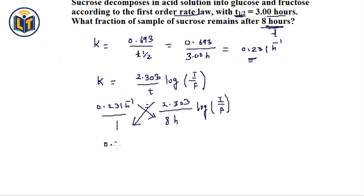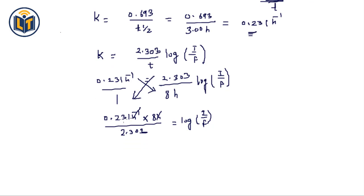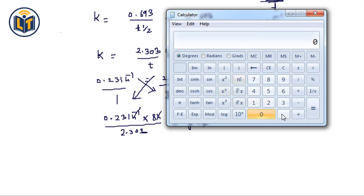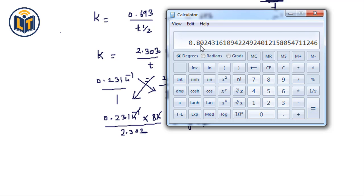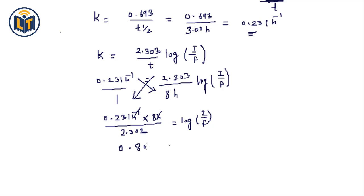Cross-multiplying to simplify: (0.231 × 8) / 2.303 = log(I / F). Calculating the left side: 0.231 multiplied by 8 equals 1.848, divided by 2.303 gives 0.8024. So log(I / F) = 0.8024.